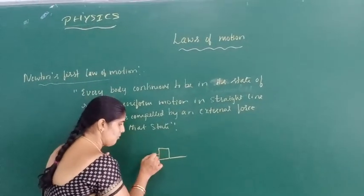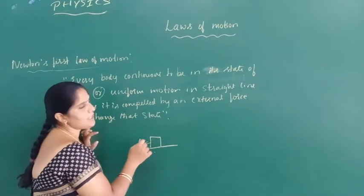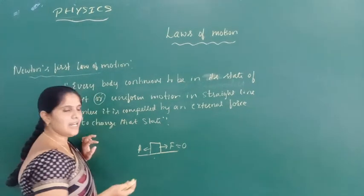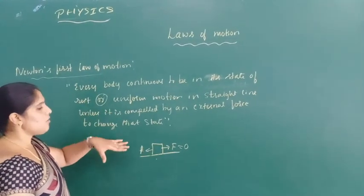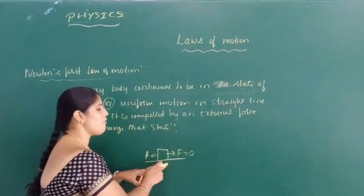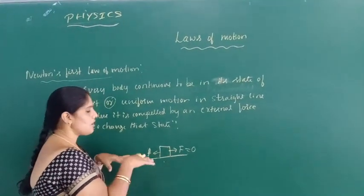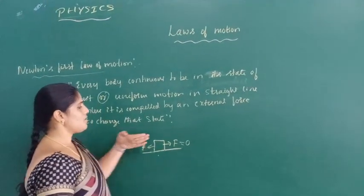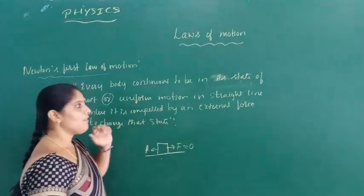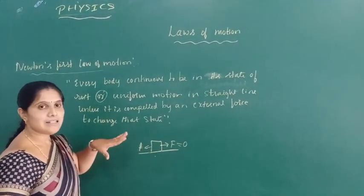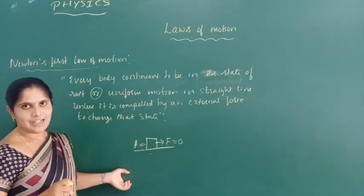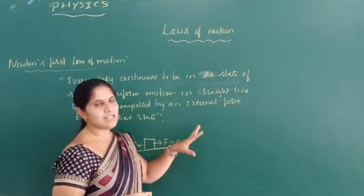Here, only frictional force is active because the block is in contact with the table. The applied force is zero because no external force is applied. So if the block is at rest, the external force is equal to zero. If the external force is equal to zero, the block does not move — that means it remains at the state of rest. It remains at the state of rest until somebody pushes or pulls it, that means until an external force is applied.